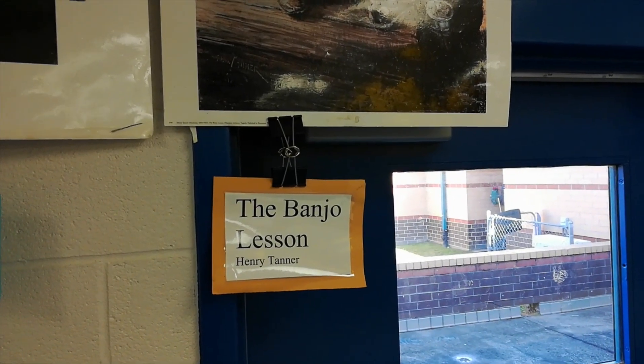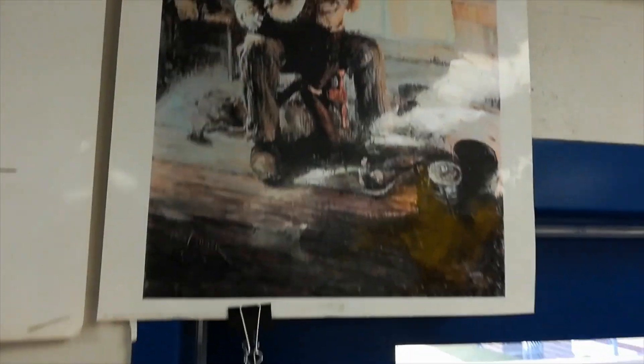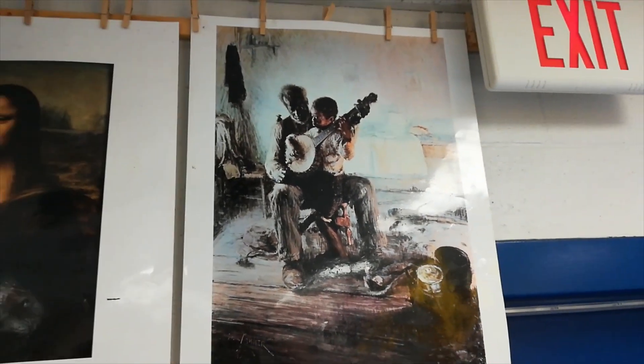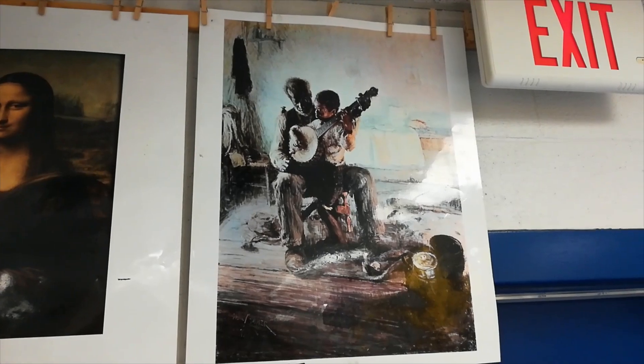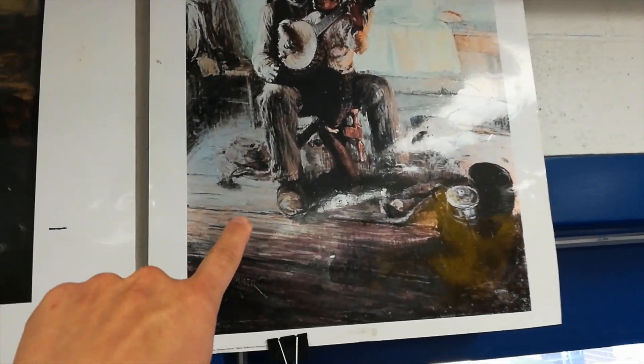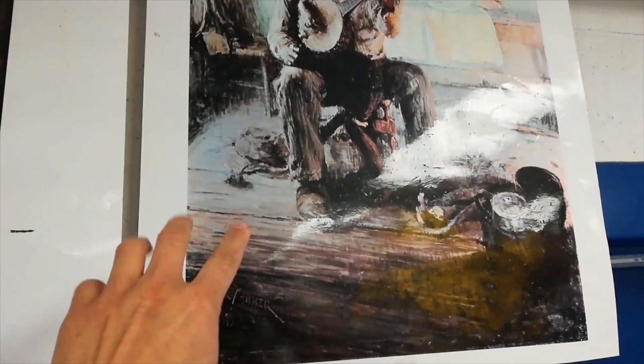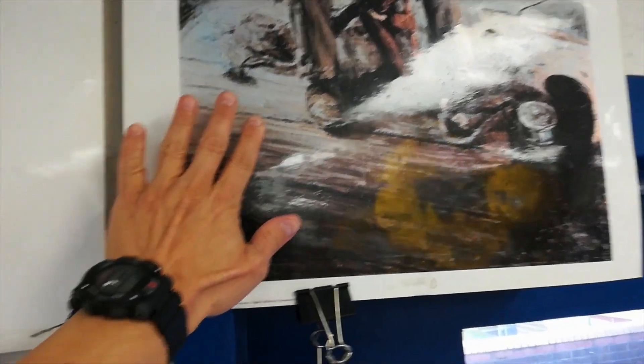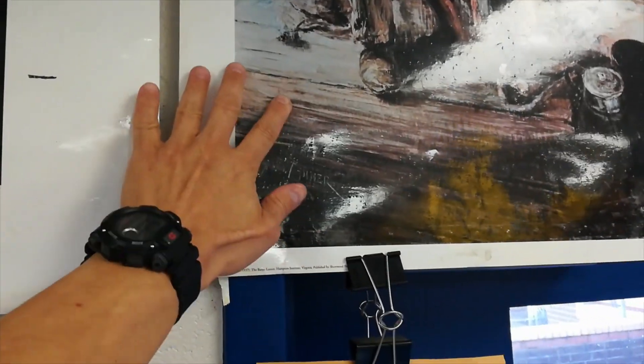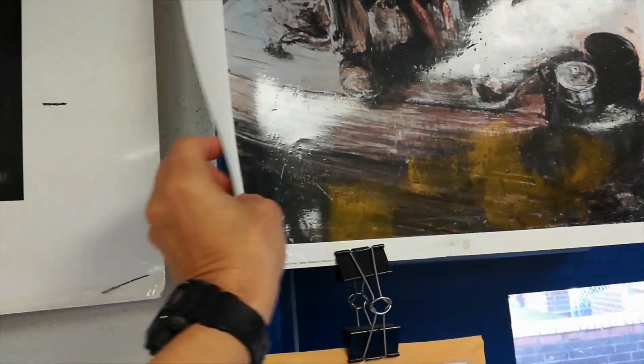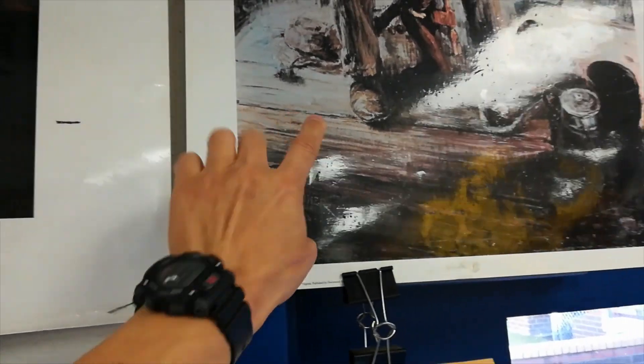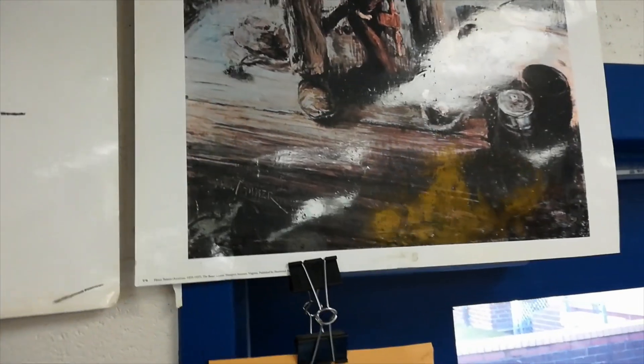When you look at Henry Tanner's painting of the Banjo Lesson, it looks like that. This is a wooden floor, but because this is a painting, when I touch this, it does not feel like a wooden floor because it's on paper.